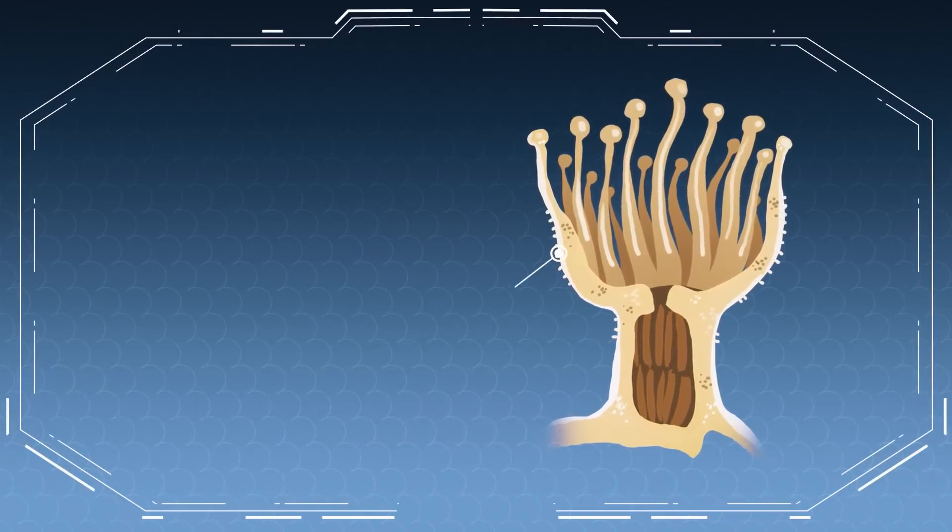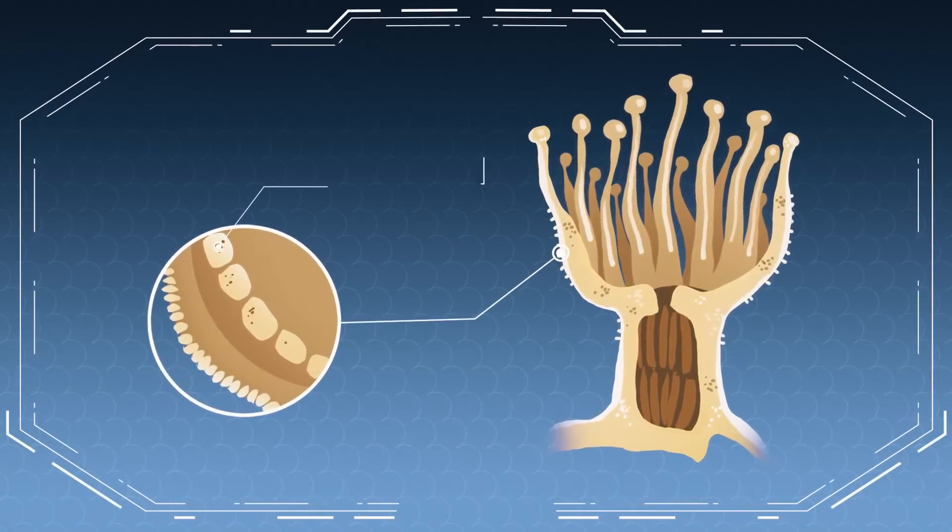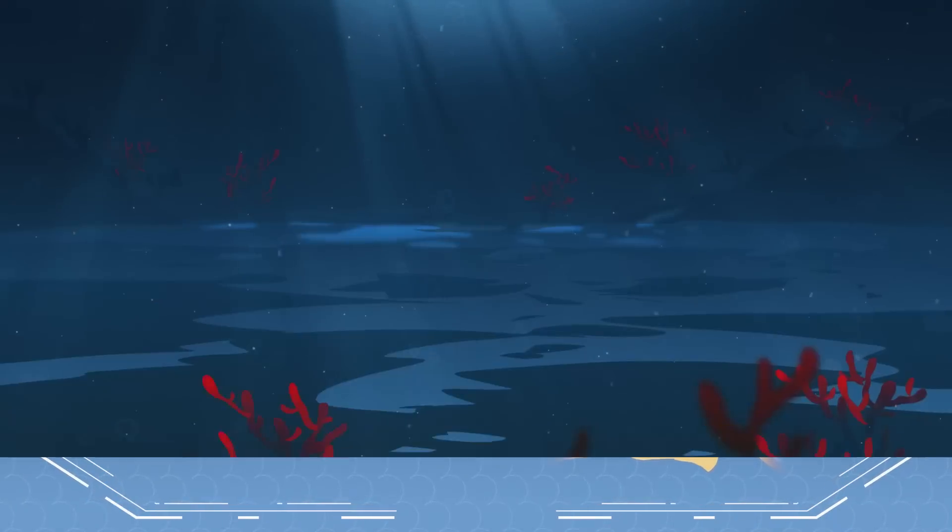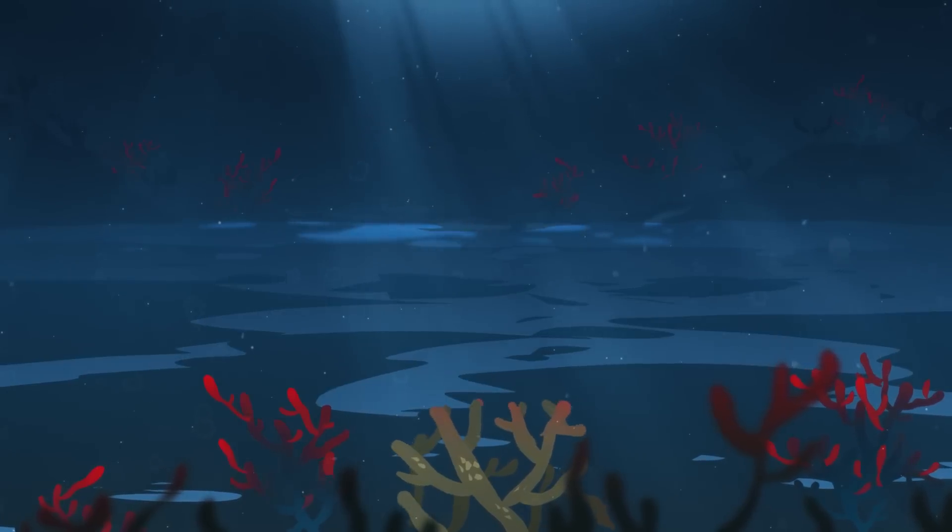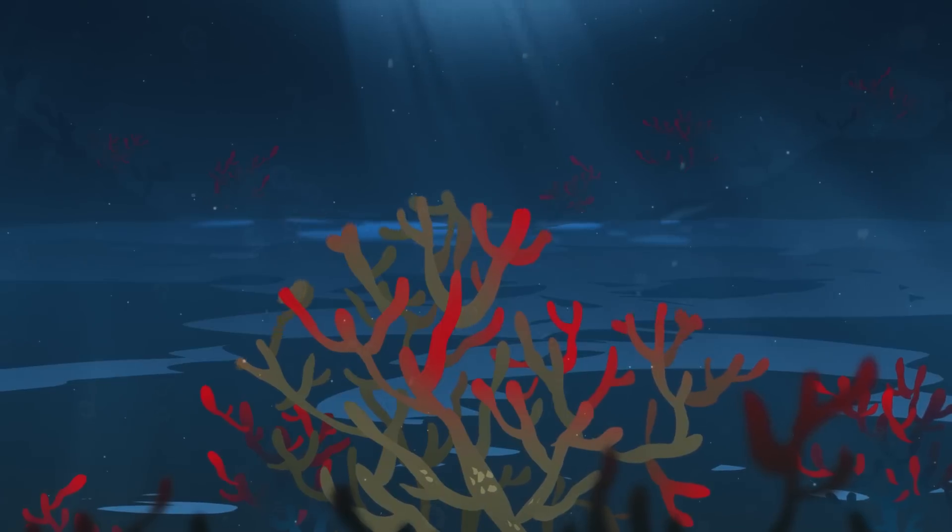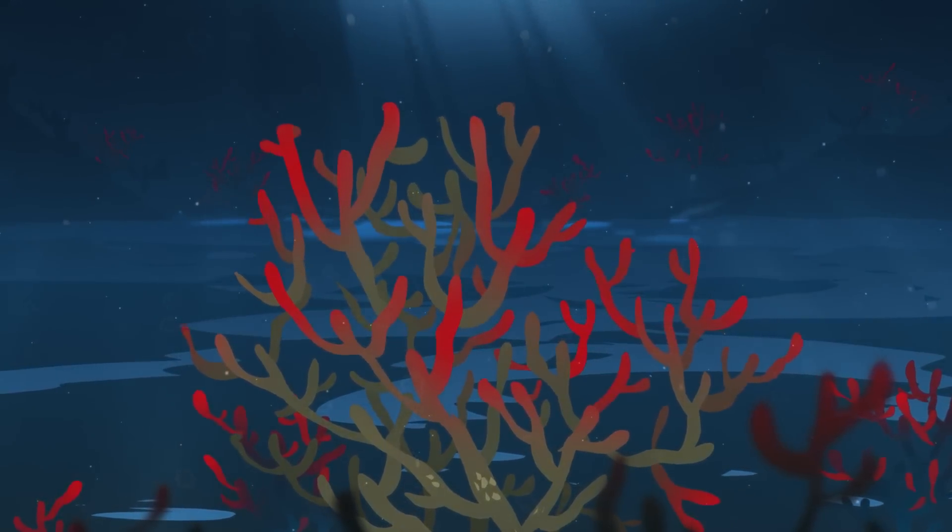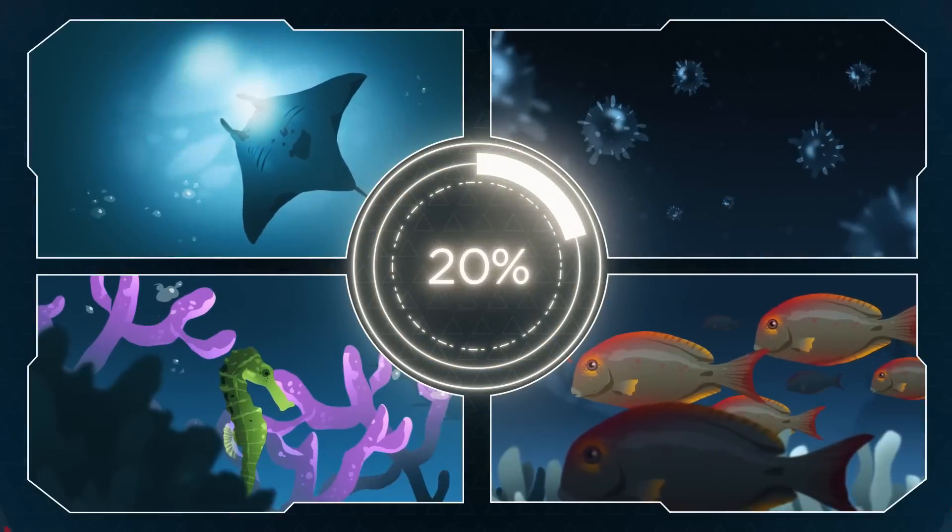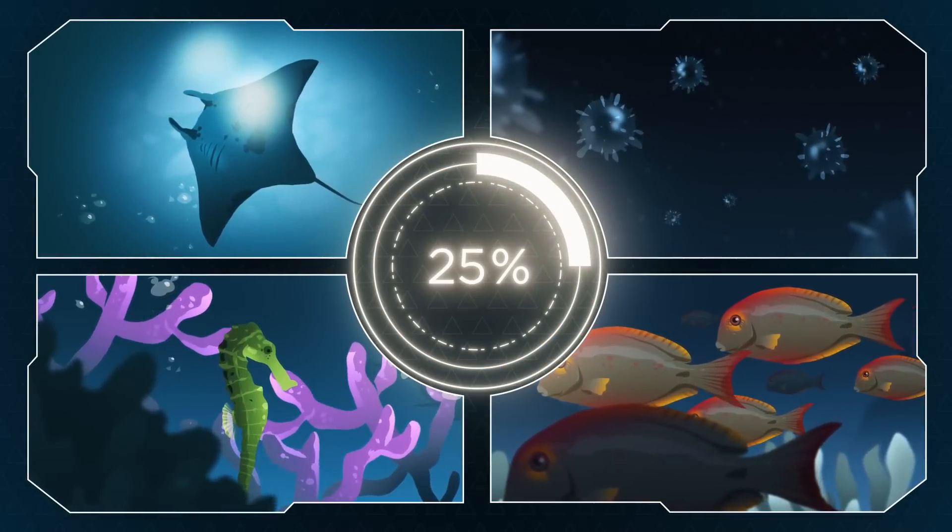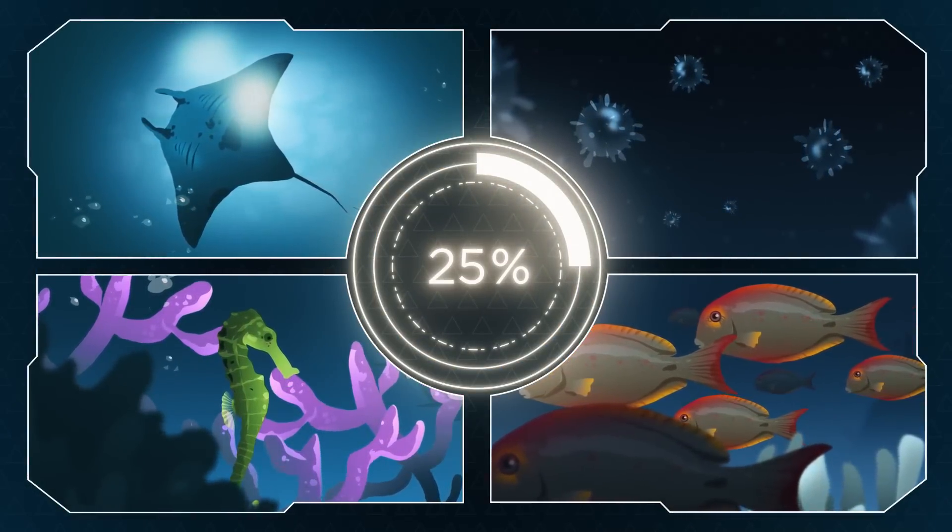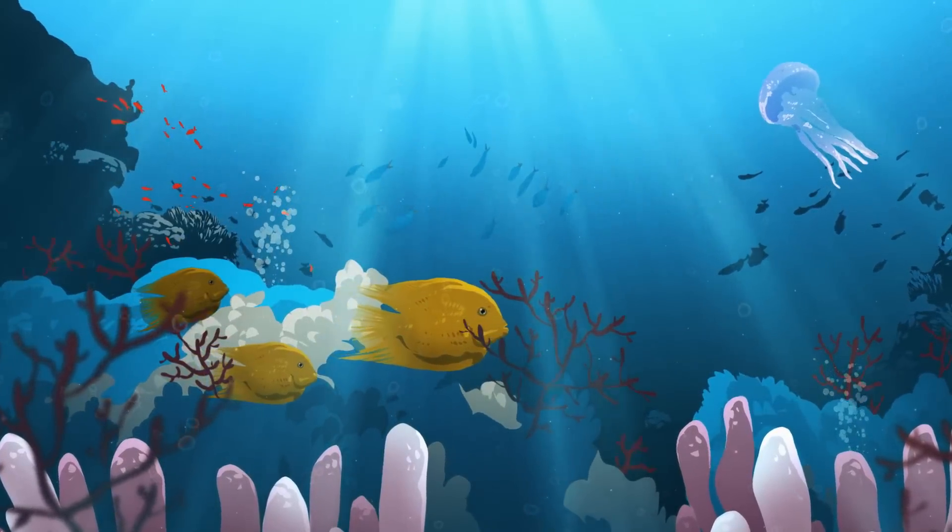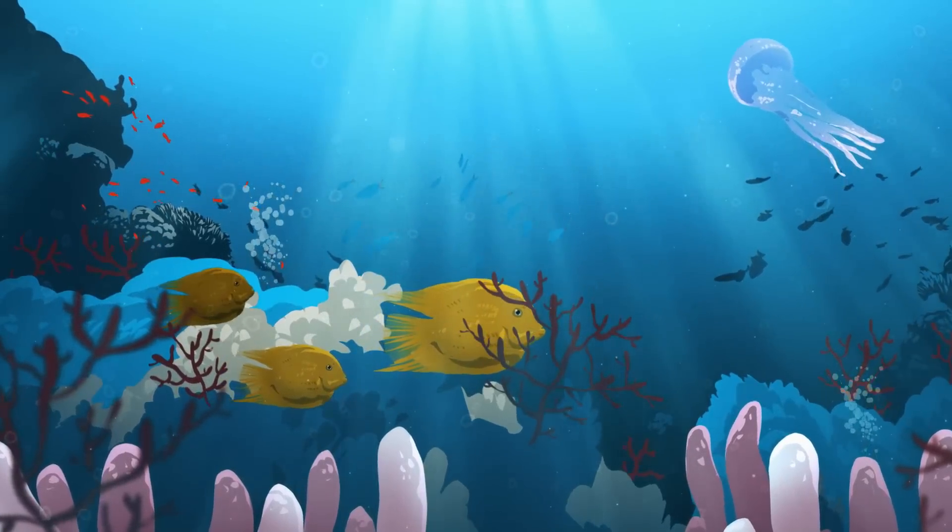Zooxanthellae live safely inside coral tissue, providing their hosts with oxygen and energy. With the help of zooxanthellae, corals build rigid exoskeletons in dynamic formations, which create a coral reef's three-dimensional structure. Tropical coral reefs support 25% of all marine life, from the largest rays to the smallest microorganisms. But they aren't the only plentiful ecosystems found in the ocean's sunny shallows.